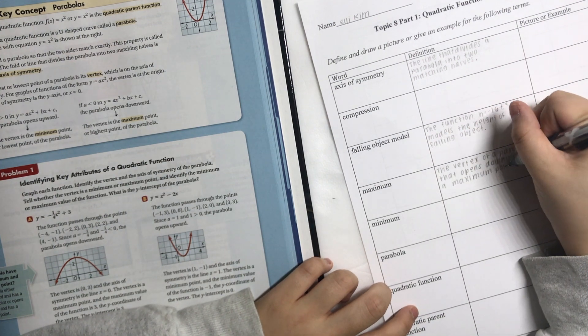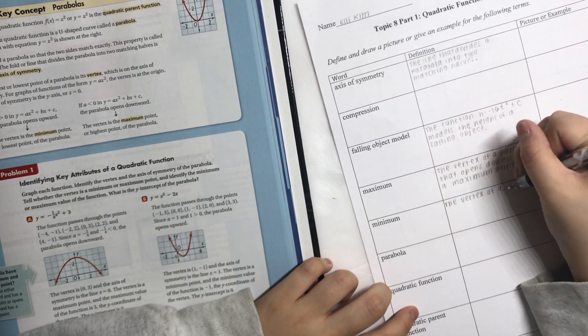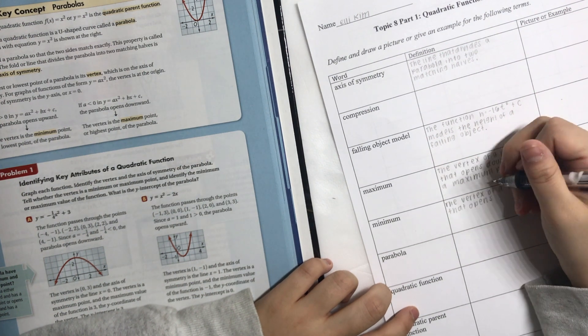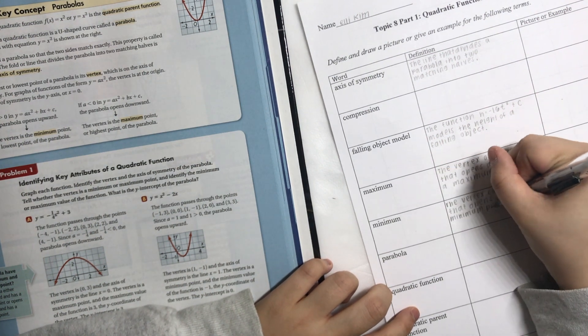If you're confused on why I'm skipping around instead of going in order, it's because the vocabulary sheet doesn't go in the same order as the textbook does.